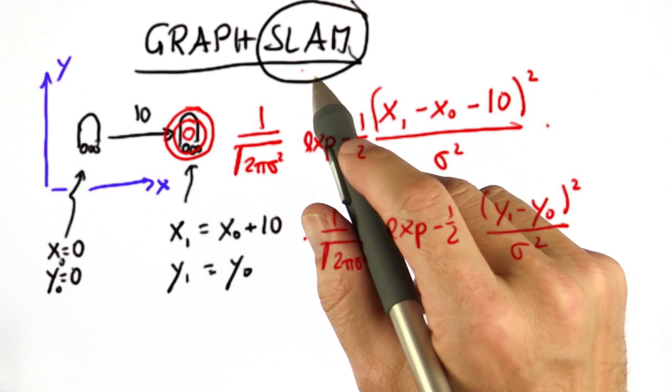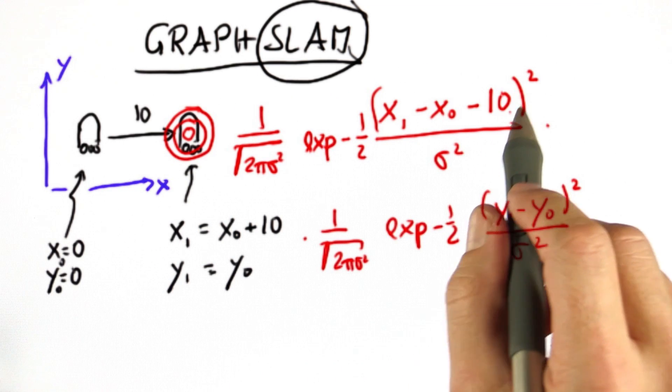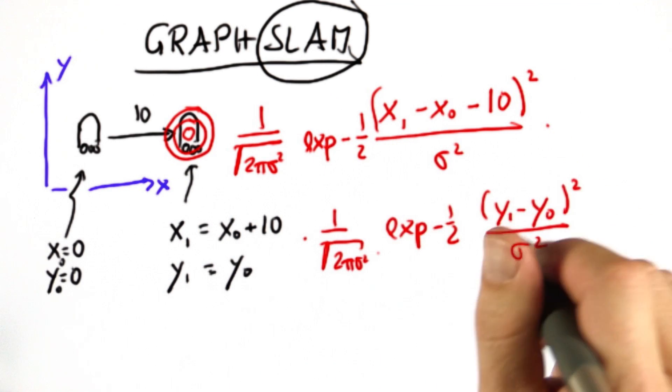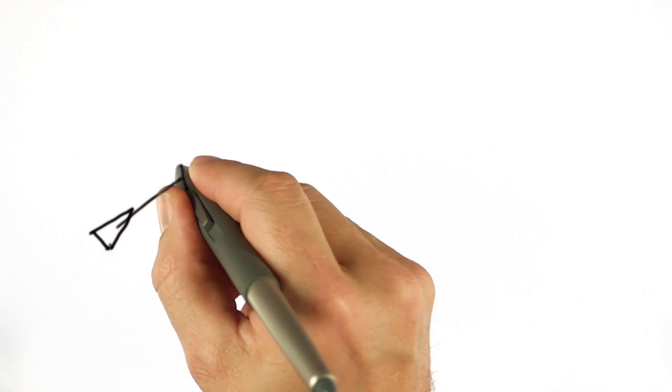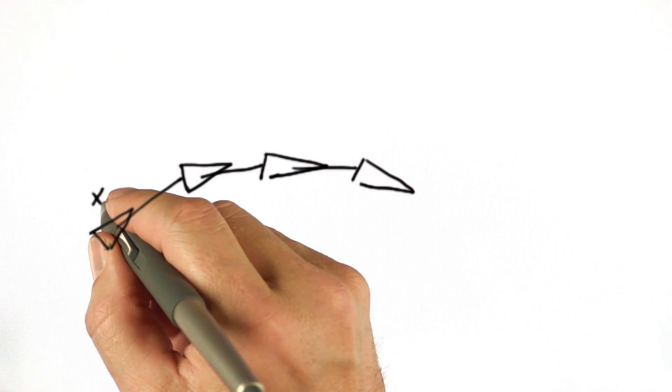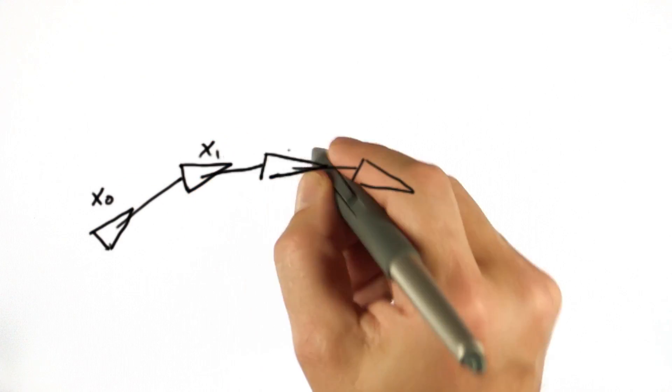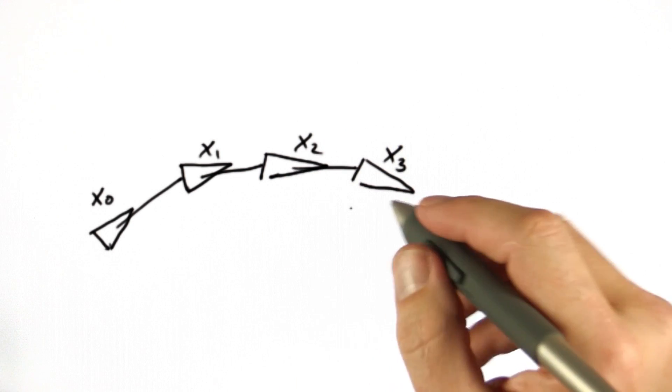So what GraphSLAM does is defining our probabilities using a sequence of such constraints. Say we have a robot that moves in some space and each location is now characterized by a vector x0 and a vector x1, vector x2, vector x3. Often they're three-dimensional vectors.